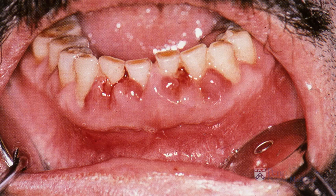Periodontal disease initially does not result in obvious symptoms, which often causes lack of awareness until the disease has reached more advanced stages. The signs and symptoms of gum disease include reddened, swollen, and/or bleeding gums, bad taste, and bad breath.